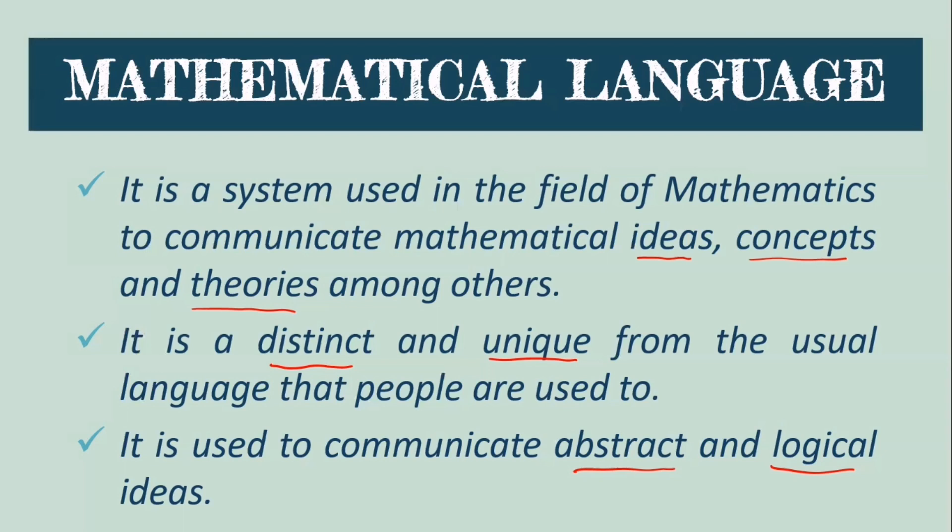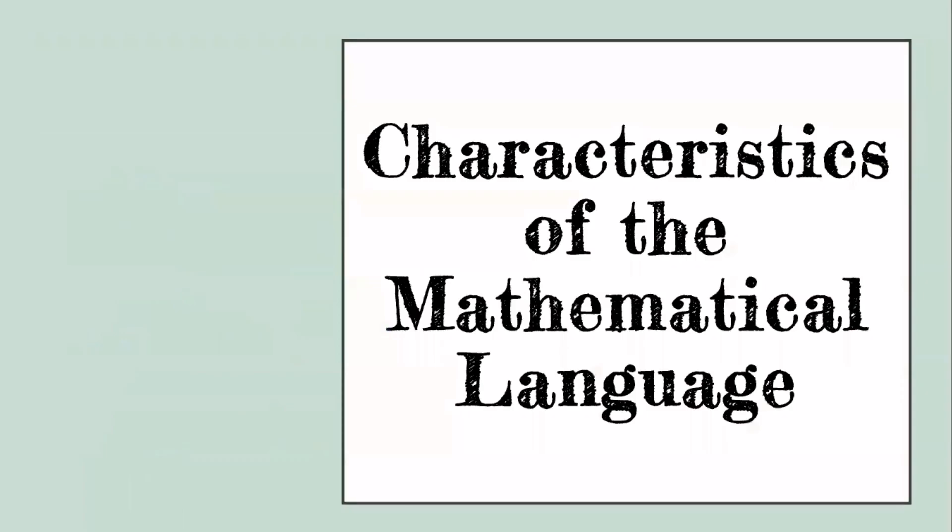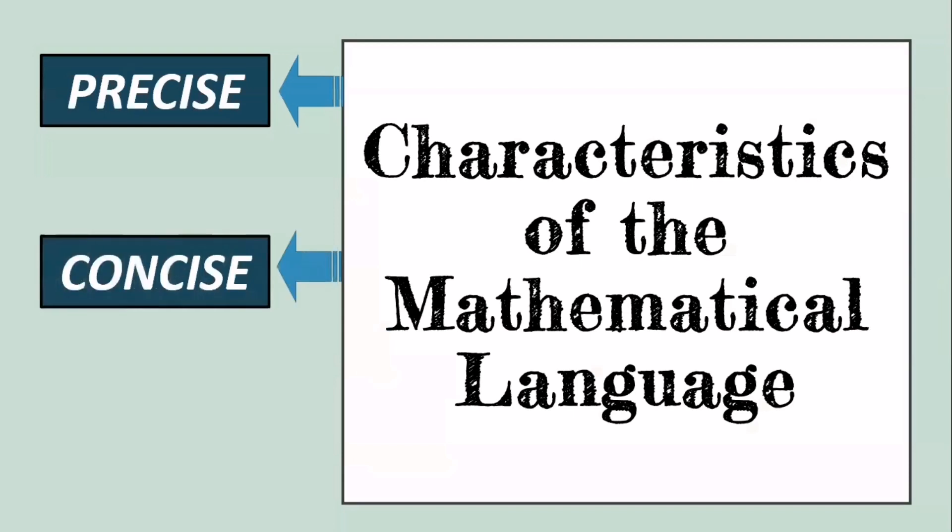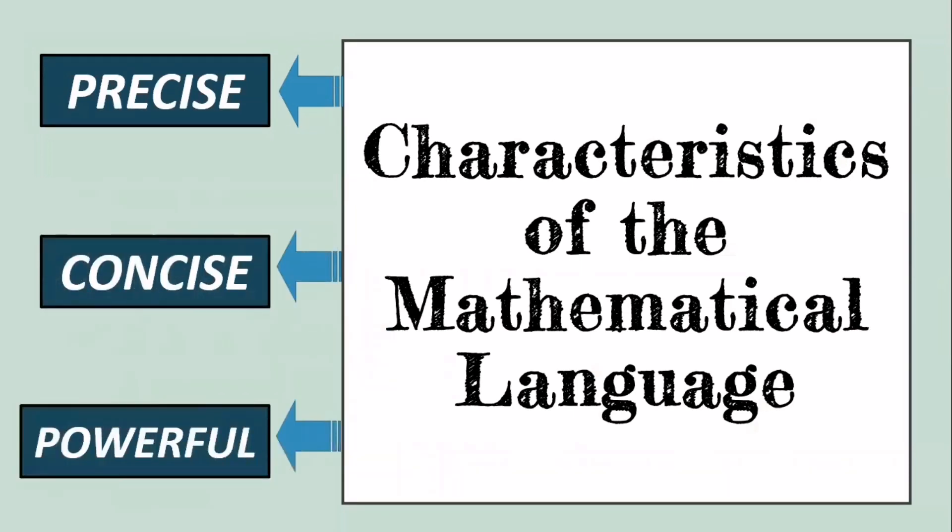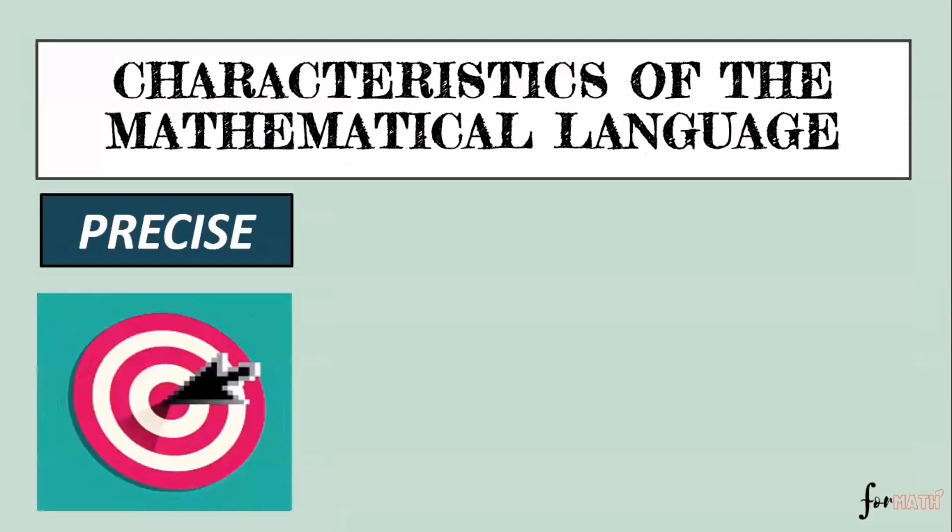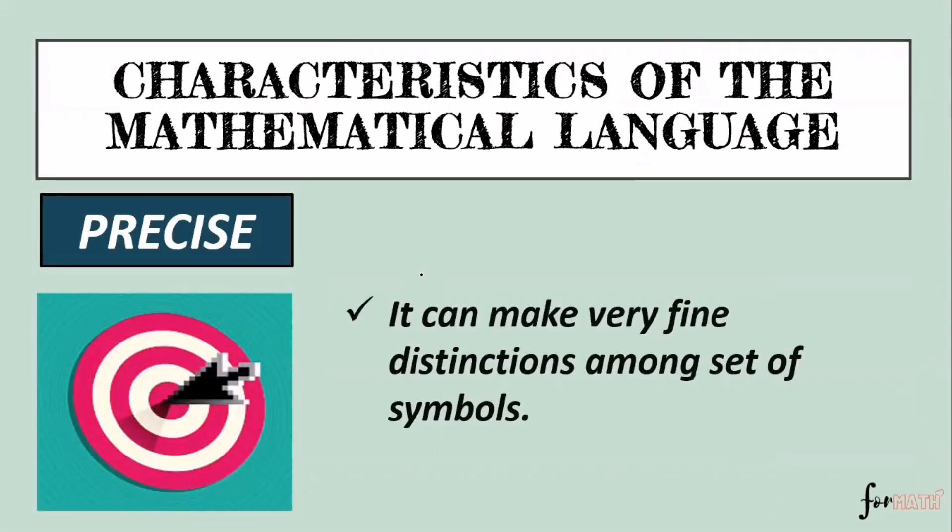We have three characteristics of mathematical language: number one being precise, number two being concise, and being powerful. So first, let's talk about being precise. Mathematical language is precise. It can make very fine distinction among sets of symbols. It is accurate or exact.